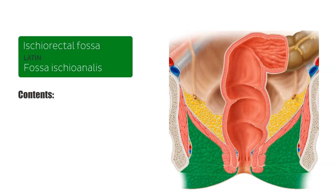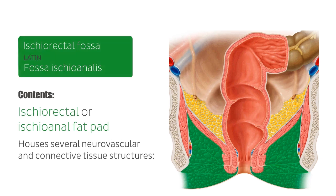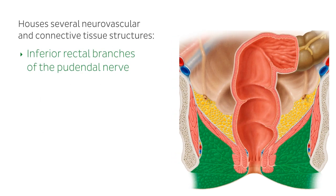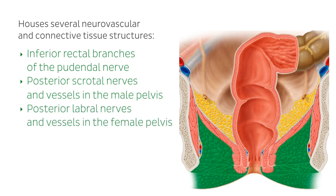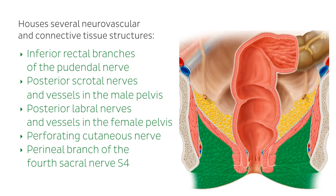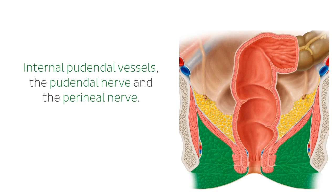However, the fossae still communicate superior to the anococcygeal body and posterior to the anal canal. The ischiorectal fossae contain adipose lobules, sometimes referred to as the ischiorectal or ischioanal fat pad. In addition, they house several neurovascular and connective tissue structures, including the inferior rectal branches of the pudendal nerve, the posterior scrotal nerves and vessels in the male pelvis, the posterior labial nerves and vessels in the female pelvis, the perforating cutaneous nerve, the perineal branch of the fourth sacral nerve S4, and the lymphatic trunks. The internal pudendal vessels, the pudendal nerve, and the perineal nerve course through the ischiorectal fossae through a tunnel formed in the fascia of the obturator internus muscle, known as Alcock's canal or the pudendal canal.